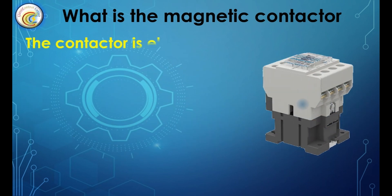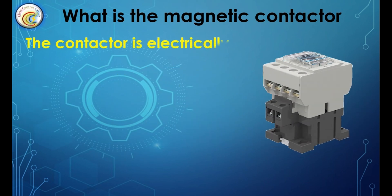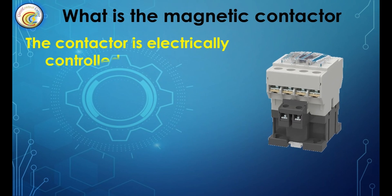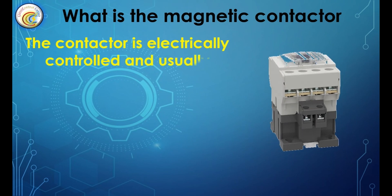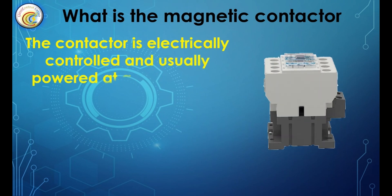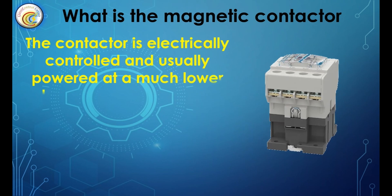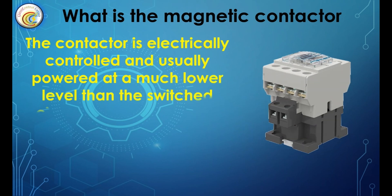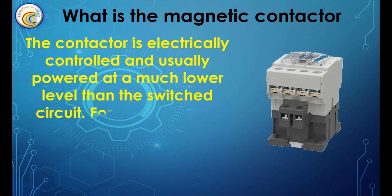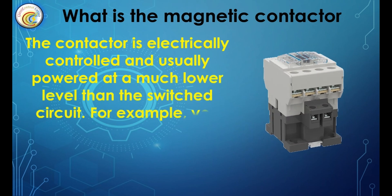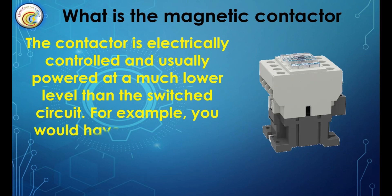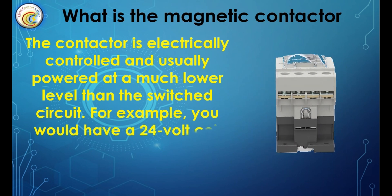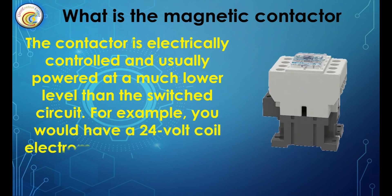The contactor is electrically controlled and usually powered at a much lower level than the switch circuit. For example, you would have a 24-volt coil electromagnet that controls a 230-volt motor switch.